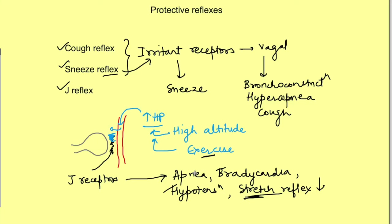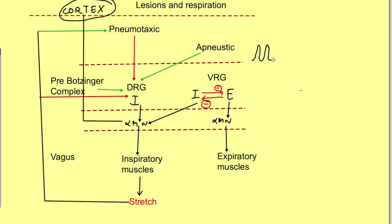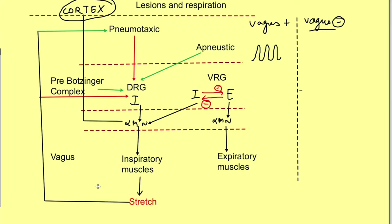Now let's solve the classic question of lesions at various levels in the brain stem and how they affect respiration. A lesion above the pons causes loss of voluntary control from the motor cortex, but involuntary control remains normal since none of the respiratory centers are affected. With vagus intact, normal inspiration and expiration occur. If the vagus is cut, feedback control is lost, switching to expiration is delayed, rate of respiration decreases, and depth of respiration increases.